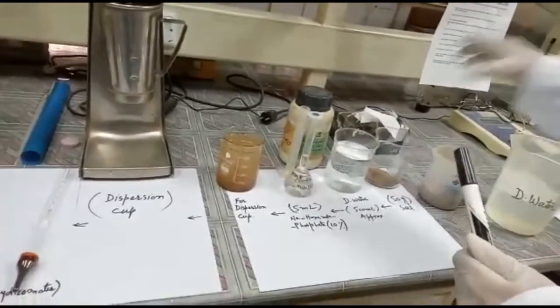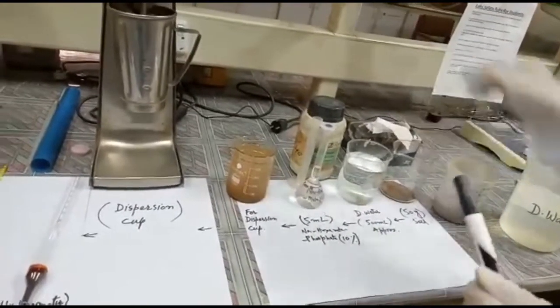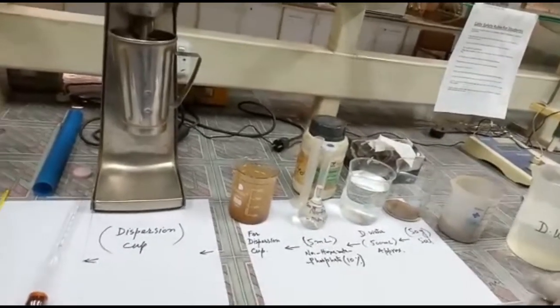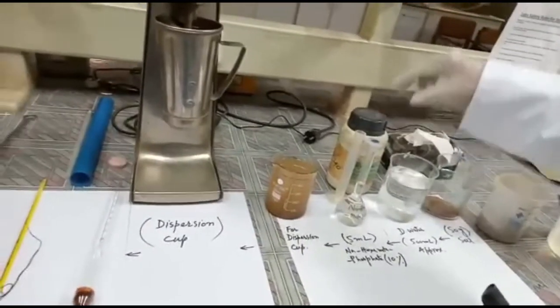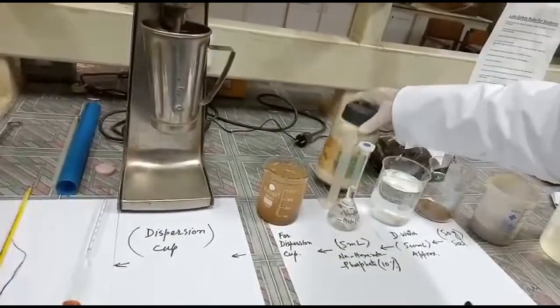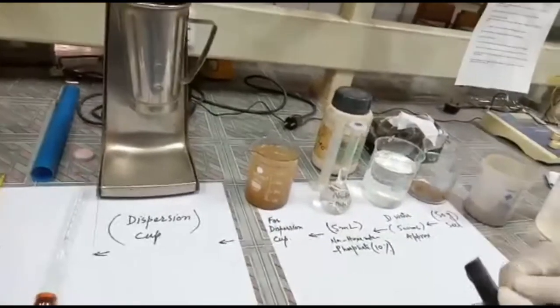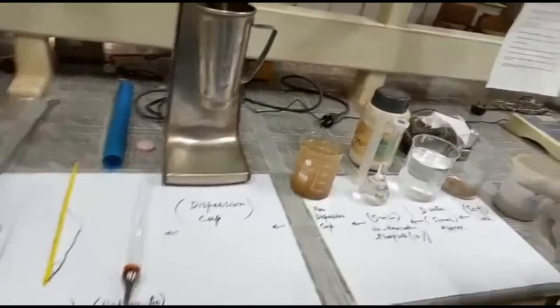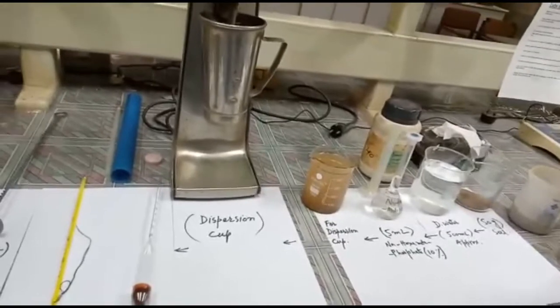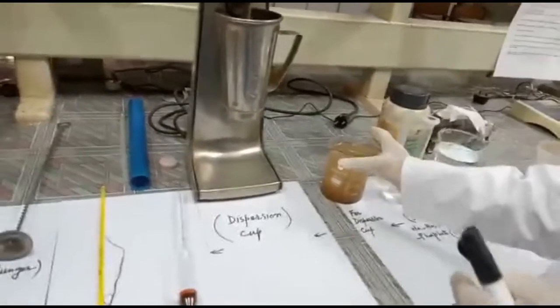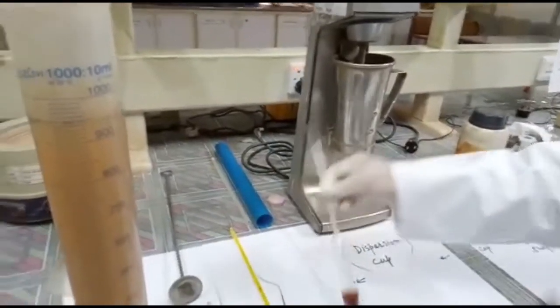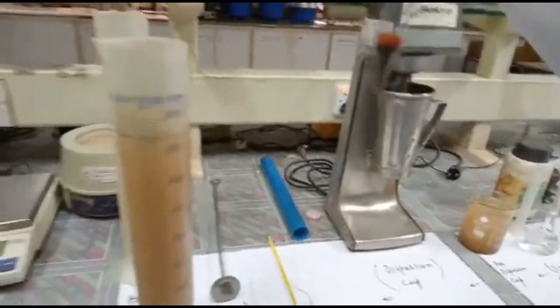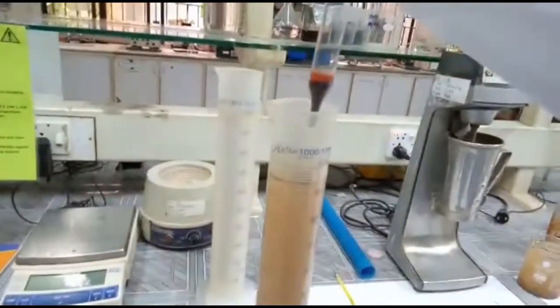First of all we need 50 gram soil and about 500 ml water. We make a mixture and we add 5 ml of 10% sodium hexametaphosphate solution. This solution is used to separate the sand and clay in the soil. Then we add this water into this cylinder. This is a 1000 ml cylinder adjusted with the hydrometer.